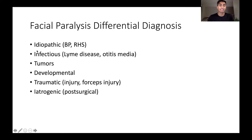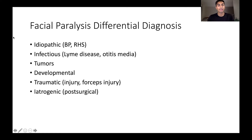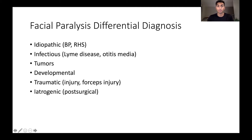One category we have is idiopathic, meaning an unknown cause, and that is when we would diagnose conditions like Bell's palsy or Ramsay-Hunt syndrome. I'm going to be using abbreviations in this slide and the next, but I will define these in the description below the video. Another category to think about is infectious causes, things like Lyme disease or otitis media — that's ear infection. Also tumors, developmental causes, some sort of trauma like blunt force injury or forceps injury when a baby is being born, and it can also be iatrogenic — caused in the hospital, for example, post-surgical.